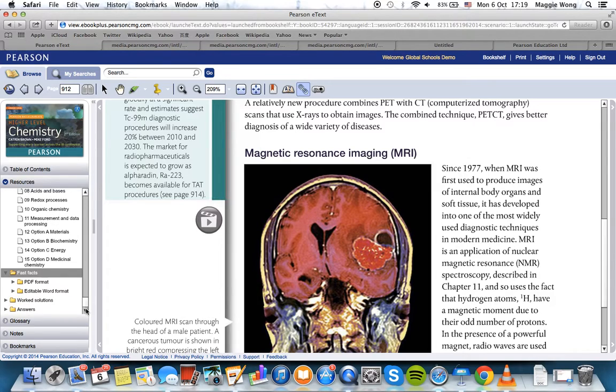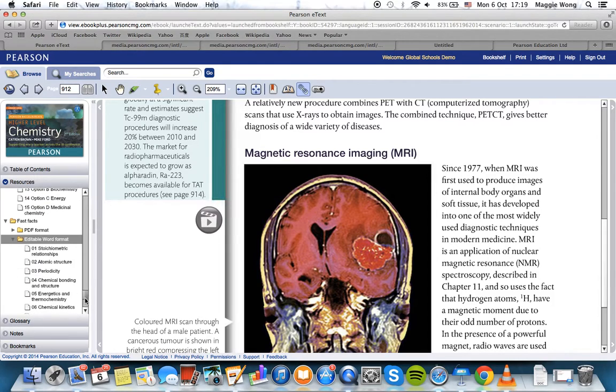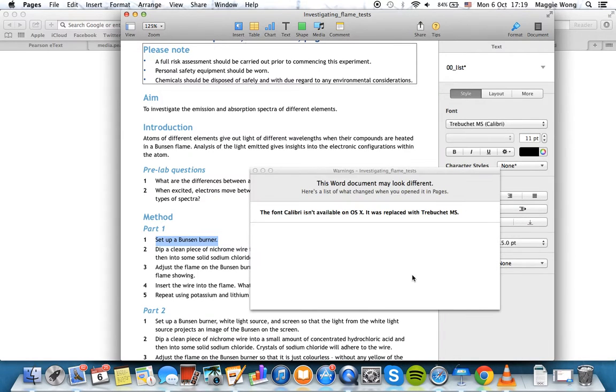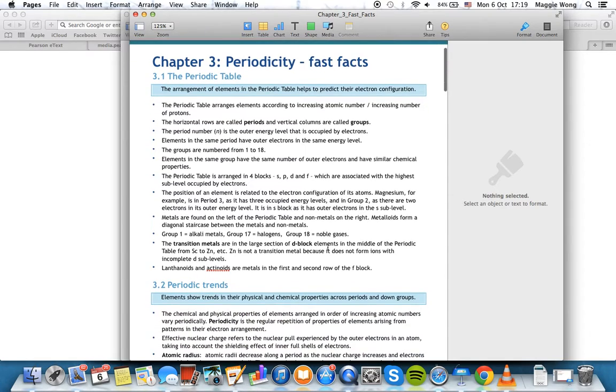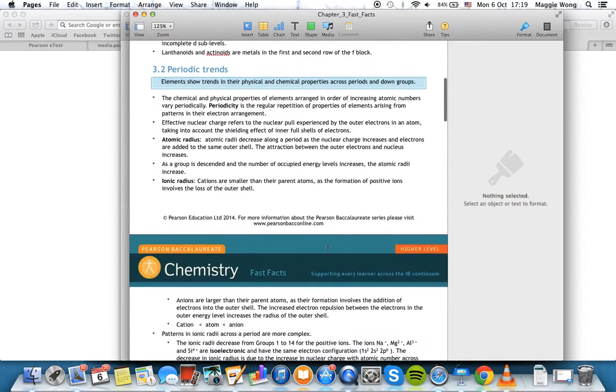The next folder here is the Fast Facts worksheet folder. These are worksheets that are again available in PDF formats or in editable word format. I'm just going to click into one of these so you can see. So this is just an example of one of the Fast Facts worksheets.